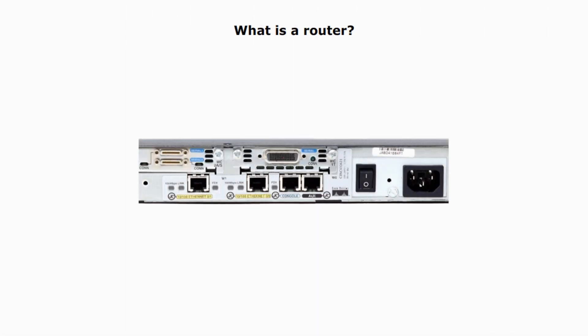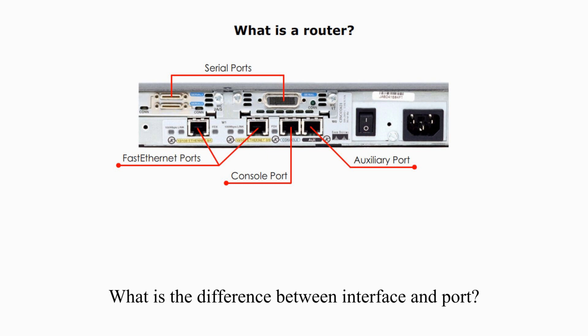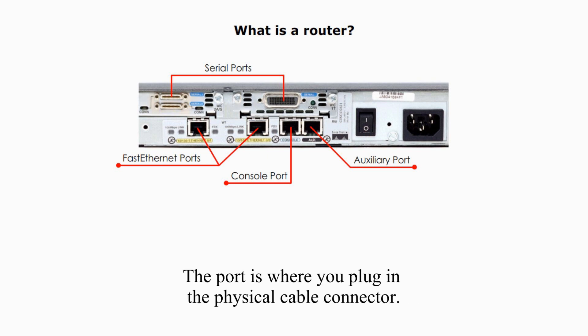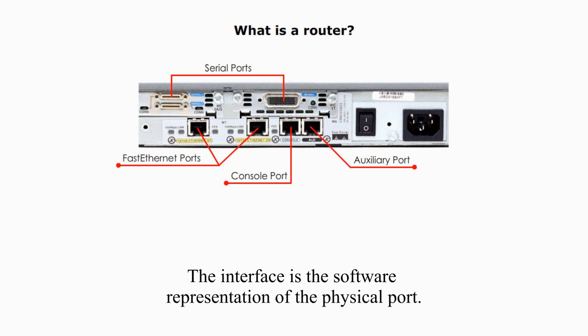Let's talk about interfaces and ports on a router. There's a wide range of routers in the market. They all look different, but they are similar in terms of interfaces and ports. For a typical enterprise-level router, you can always see three types of physical ports: a console port, a LAN port, and a WAN port. The port is where you plug in the physical cable connector. The interface is what you configure in the router's operating system. Therefore, the interface is the software representation of a physical port.